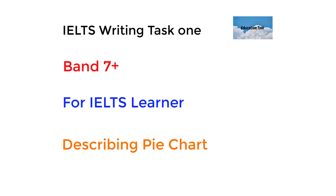Hi everyone, I hope you're all doing good today. Today I'm going to give you an example of how to describe pie charts. You have to be able to summarize, report, and compare results to achieve a band of seven and above in writing task one. You have to write about 150 words and have a good range of vocabulary and grammar.